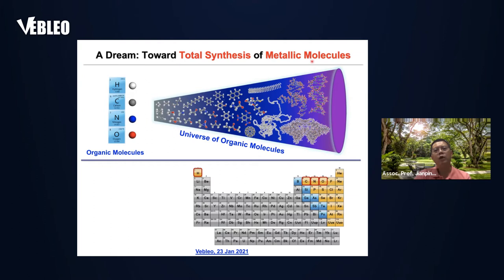If you are working as a materials chemist, everybody knows that organic chemistry is very powerful. Organic chemists can simply use four elements — hydrogen, carbon, nitrogen, and oxygen — to create unlimited molecules: small molecules like drugs, large molecules like polymers, or very complicated molecules like biomolecules such as DNA or proteins.